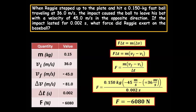Because it says if the impact lasted for .002 seconds, what force did Reggie exert on the baseball? Well, the baseball will be exerting 6080 newtons on the bat. But then the bat will be equal and opposite to that. And that will be 6080 newtons. Again, Newton's third law of motion.